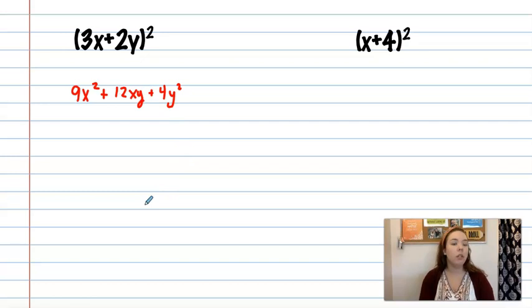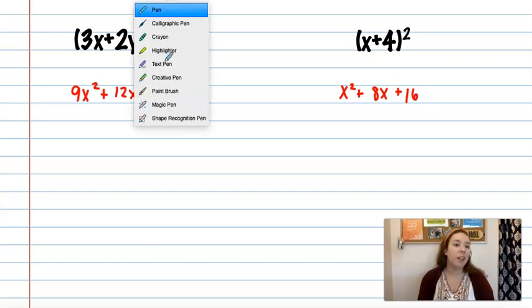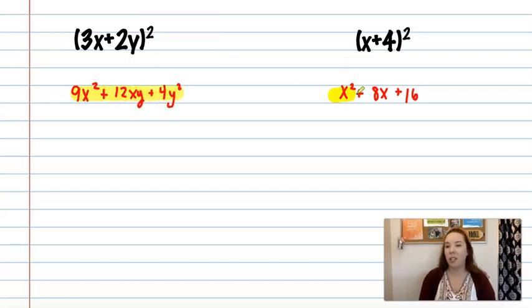But if that doesn't make sense to you, use the box method. You'll get the exact same answer. Here, my first term, if I square it, is x squared. My last term, if I square it, 4 times 4 is 16. If I multiply them together and double, I'll get 4x. Double that is 8x. Okay, and that's my final answer. But again, totally okay to use the box method. This doesn't save you a ton of time. But if you do recognize that you have the same binomial twice or the same binomial squared, you can use this shortcut.